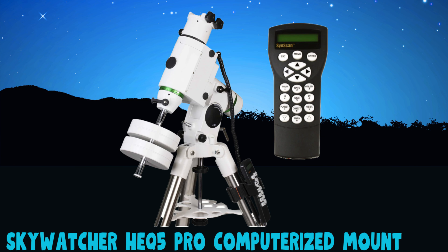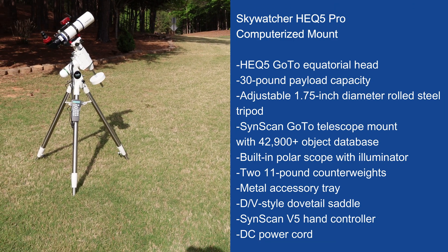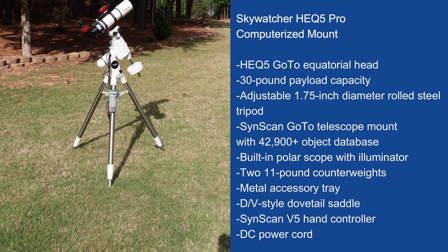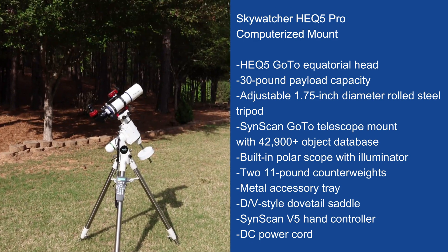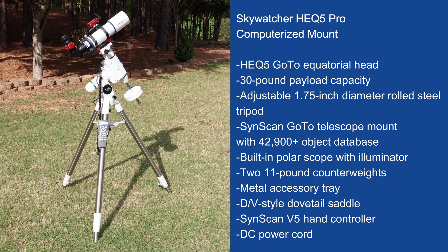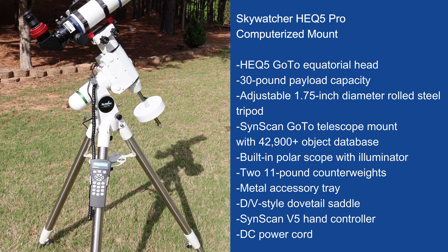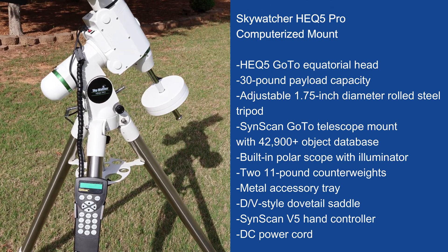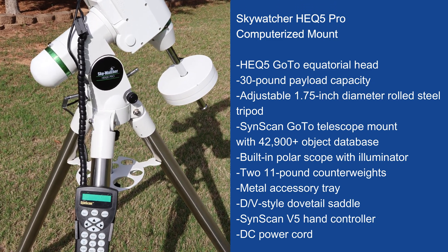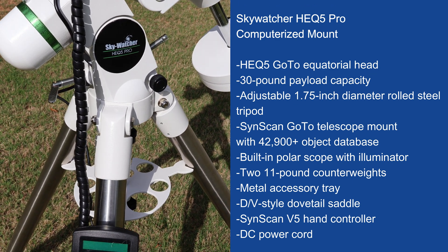This equatorial mount has a 30-pound payload capacity, a hand controller with a 42,900-object database, a built-in polar scope with an illuminator, two 11-pound counterweights, and a dovetail saddle. Setting up these mounts has some common steps; however, your setup may vary. Please make sure to reference your instruction manual.